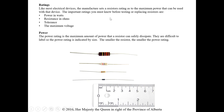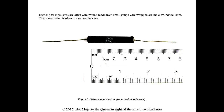Like most electrical devices, the manufacturer sets a resistor rating to a maximum power that can be used with the device — we don't want to exceed that. For testing or replacing, we need to know the power in watts, resistance in ohms, the tolerance, and the maximum voltage. The power rating is the maximum amount of power that a resistor can safely dissipate. They are difficult to label, so they are indicated by size — the smaller the resistor, the smaller the power rating. Higher power resistors are often wire-wound, made from small-gauge wire wrapped around a cylindrical core.